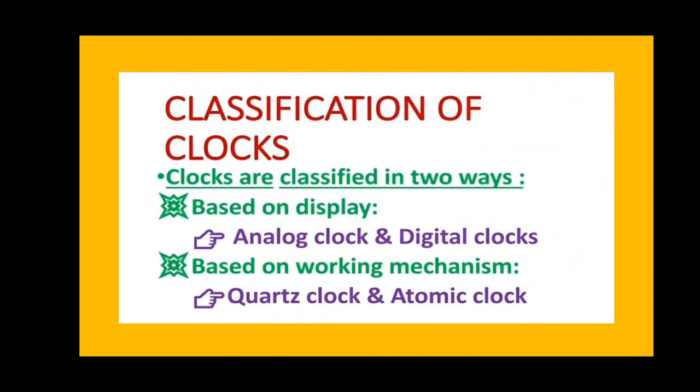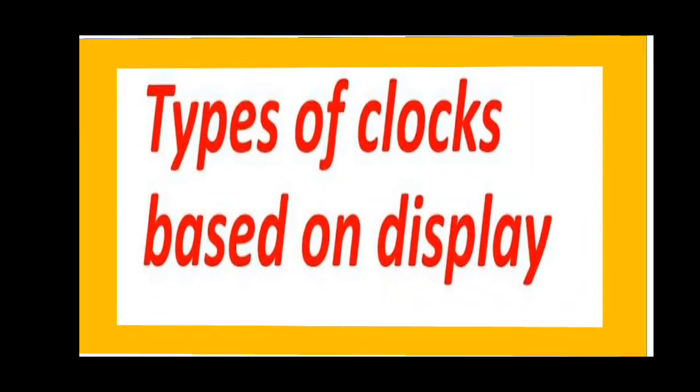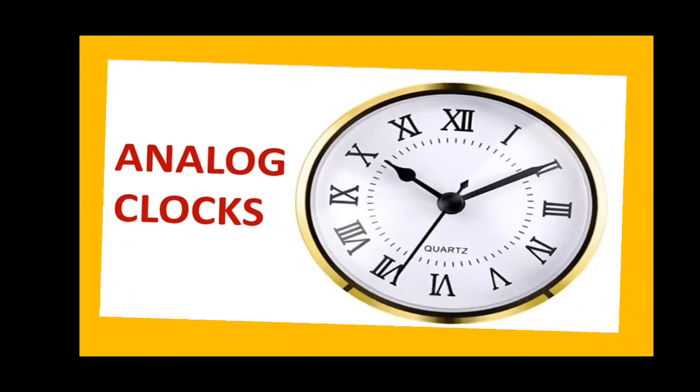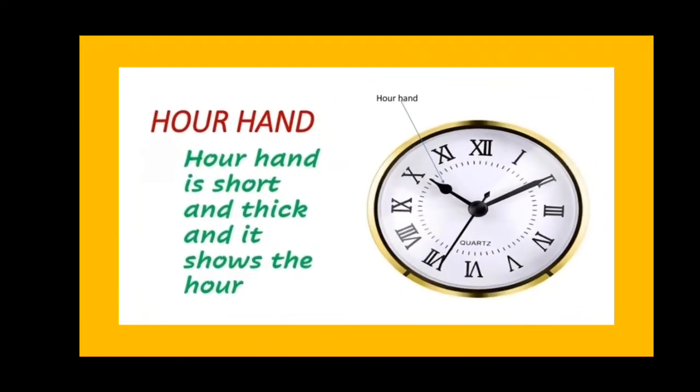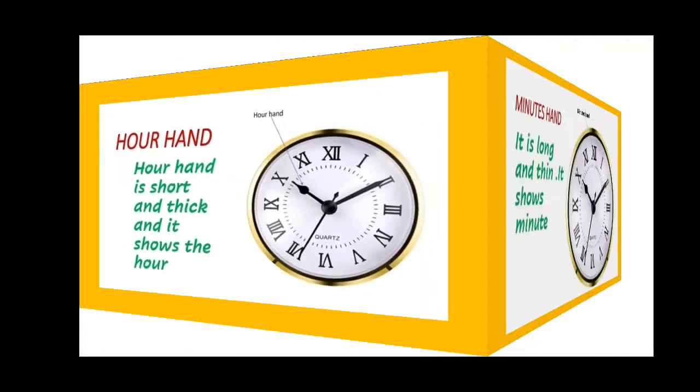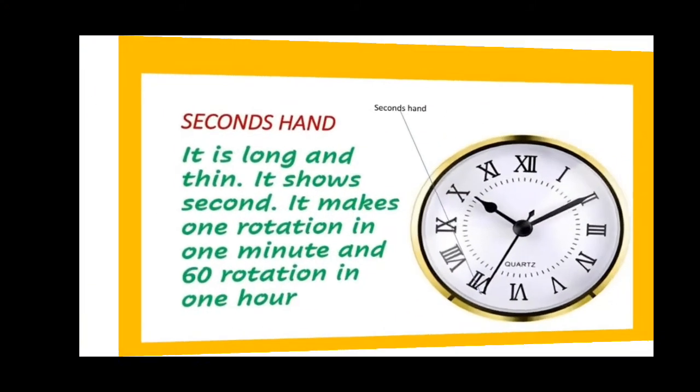Let us have a look at the types of clocks based on the display. Here is an analog clock. An analog clock is a clock which has a face called a dial and it has three hands. All those three hands show different parts of time. Like the hour hand, it is short and thick and shows the hour. And the minute hand, it is long and thin and shows minutes. It makes one rotation in one hour.